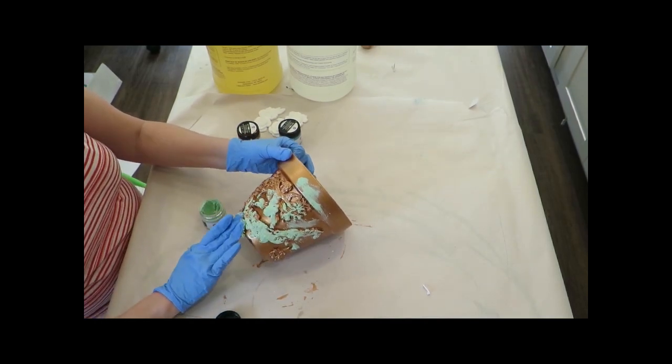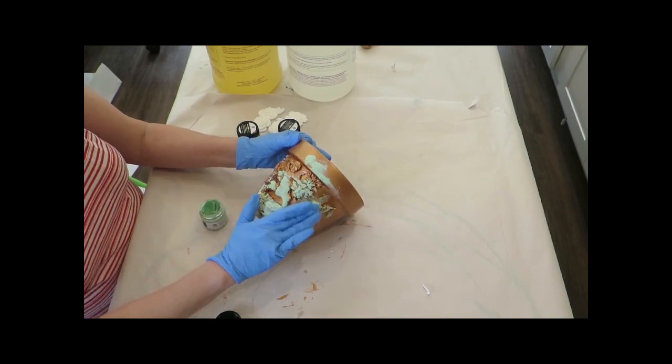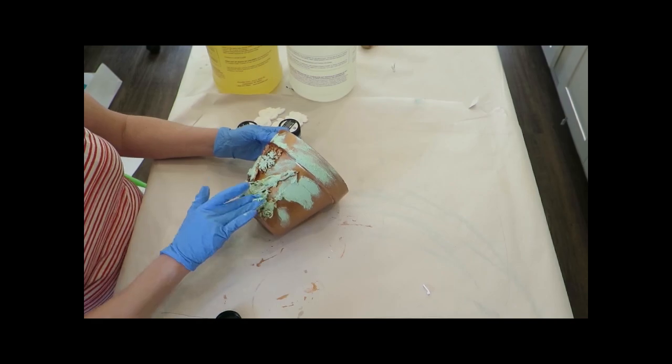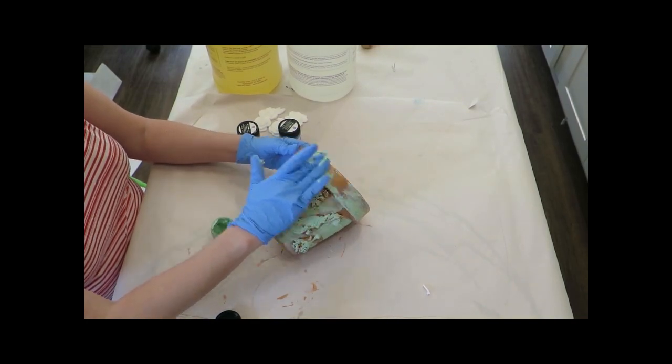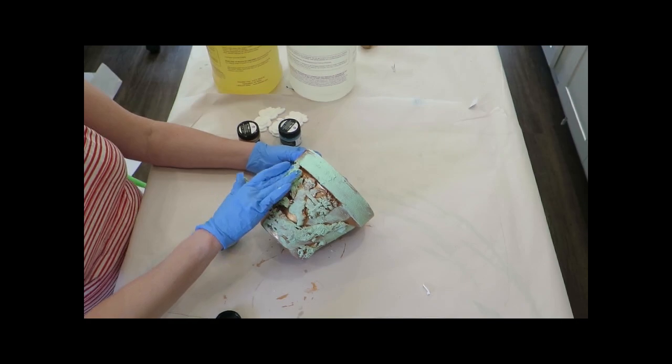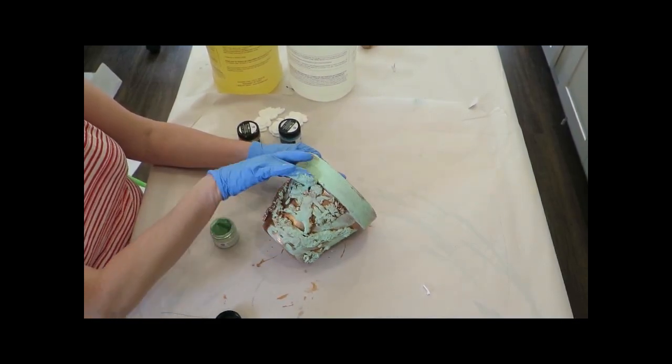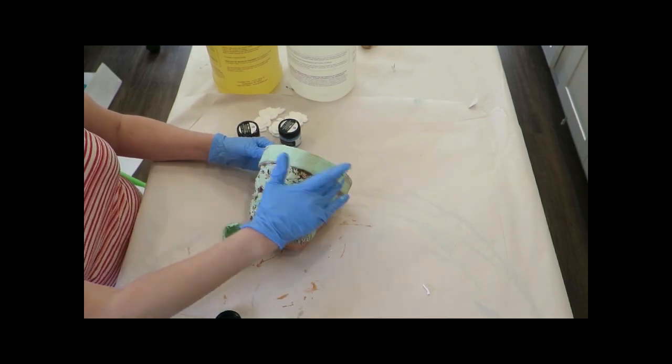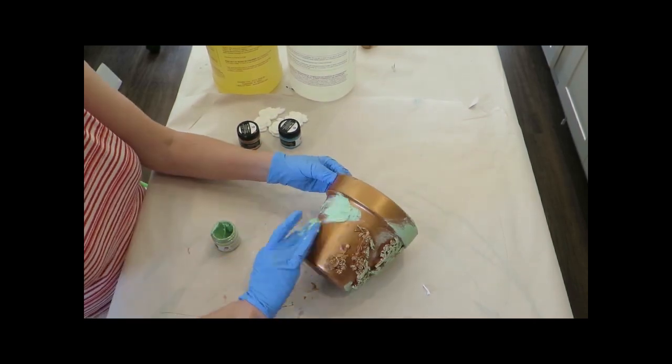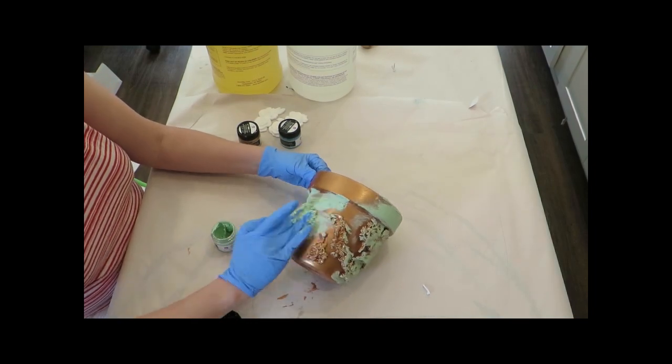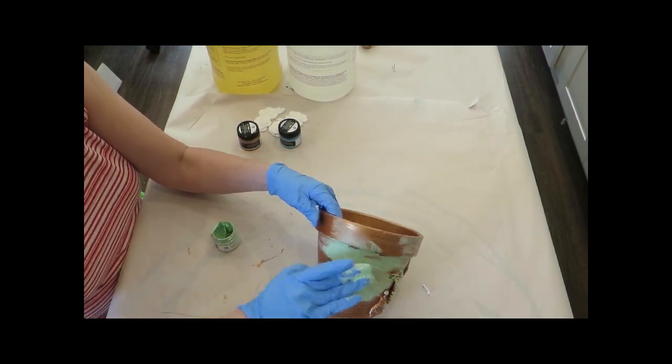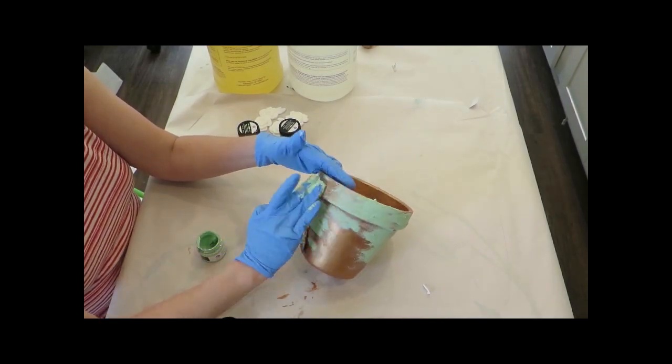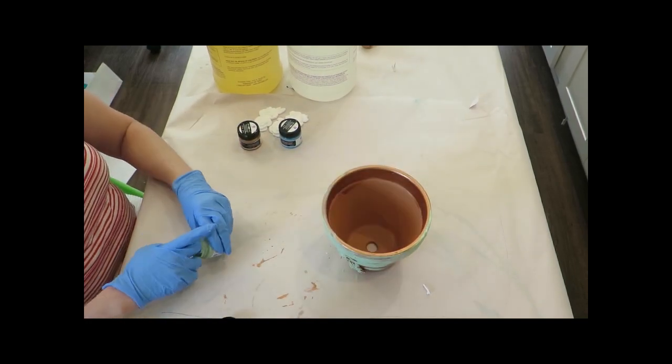Just showing you a couple different things here. The first is a set that has all three of the products that you need in it: the Mint Paste, the Patina Blue Paste, and then a Brass Paste. This mint green is very chalky, it's got a lot of texture in it, and when it dries it's going to kind of look like concrete.